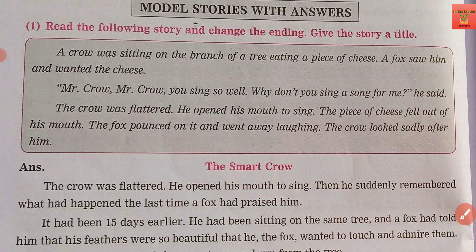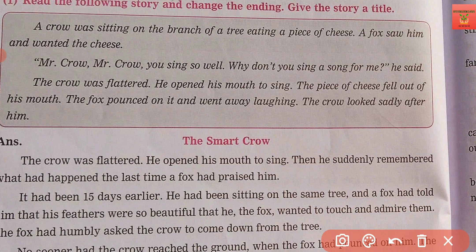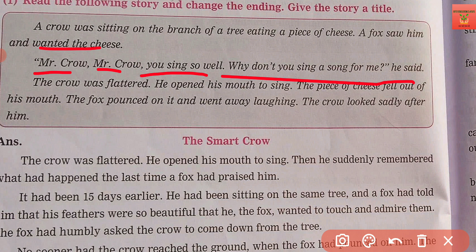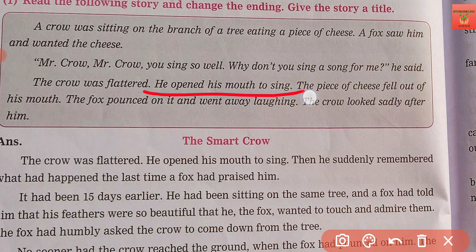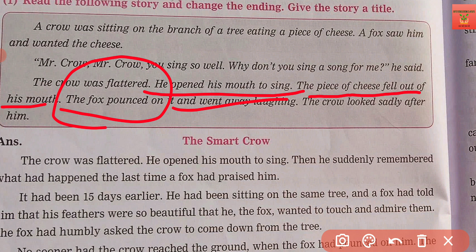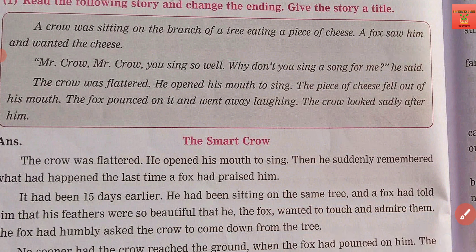The fox says to the crow: 'Mr. Crow, you sing so well — why don't you sing a song for me?' The fox says, 'Crow, you are very good at singing, so why don't you sing a song for me?' The crow was flattered and very happy. He opens his mouth to sing. This is the story outline we have, and we are going to change the ending.